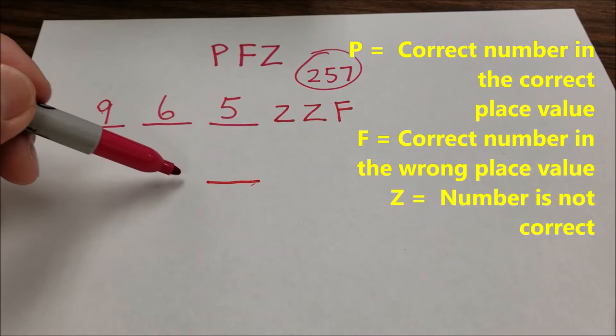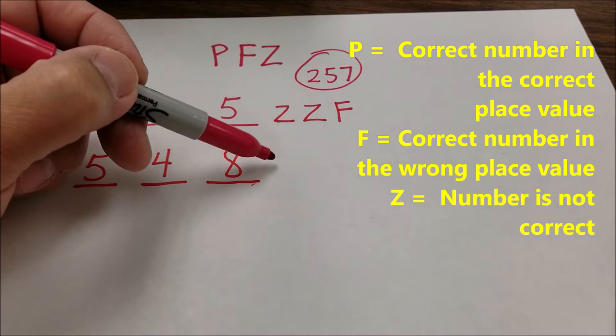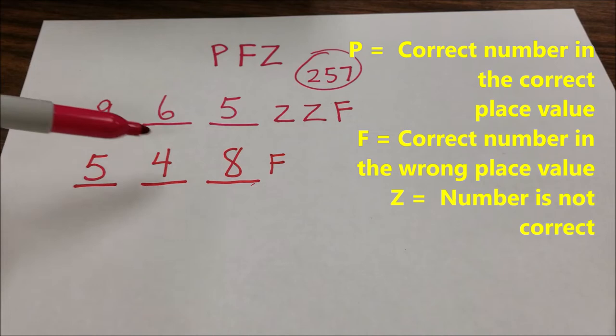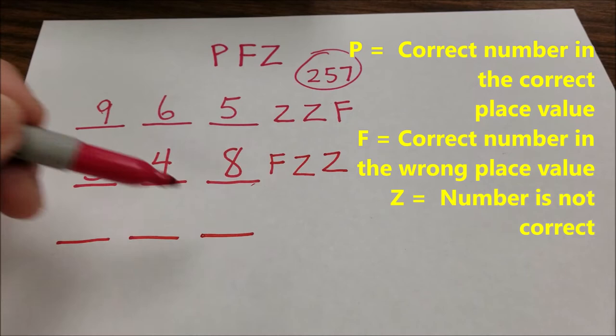So now they will go, okay, let me try to put 5 at the front. Let's try 548. So if you can see here, they still have the 5 in the wrong place value. So they'll get an F. What's good about that is they now know that the 5 should go in the middle. And now they know 4 and 8 are not even in the number. So you can see, like Wordle, the person is going to get closer and closer and hopefully start to figure this out.